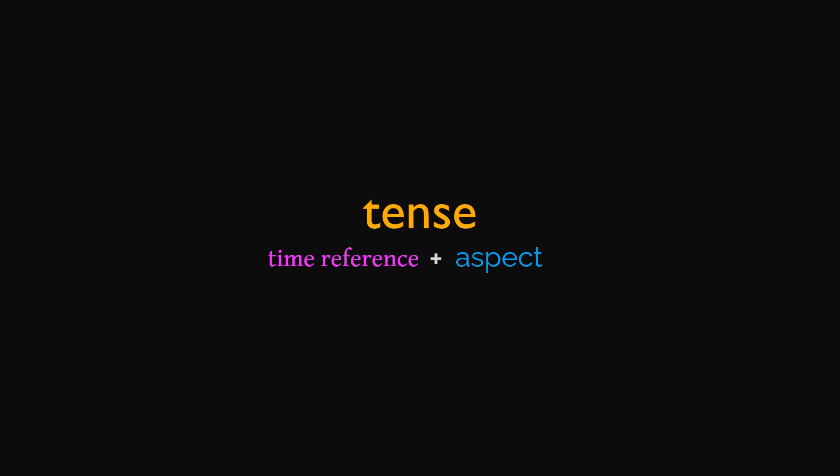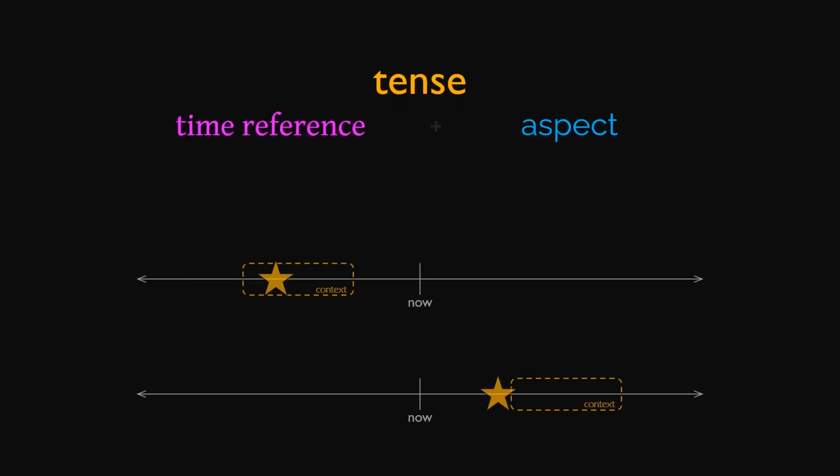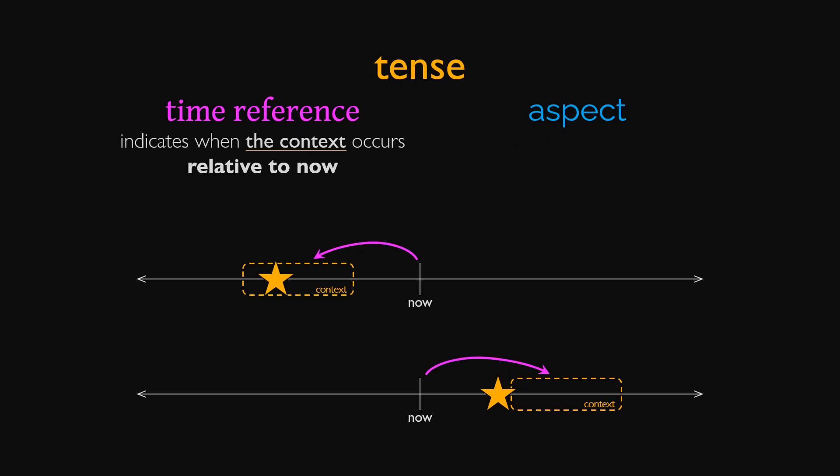Tense is comprised of two distinct facets: time reference and aspect. Time reference indicates when the context takes place relative to now, and aspect indicates when the verb takes place relative to the context.